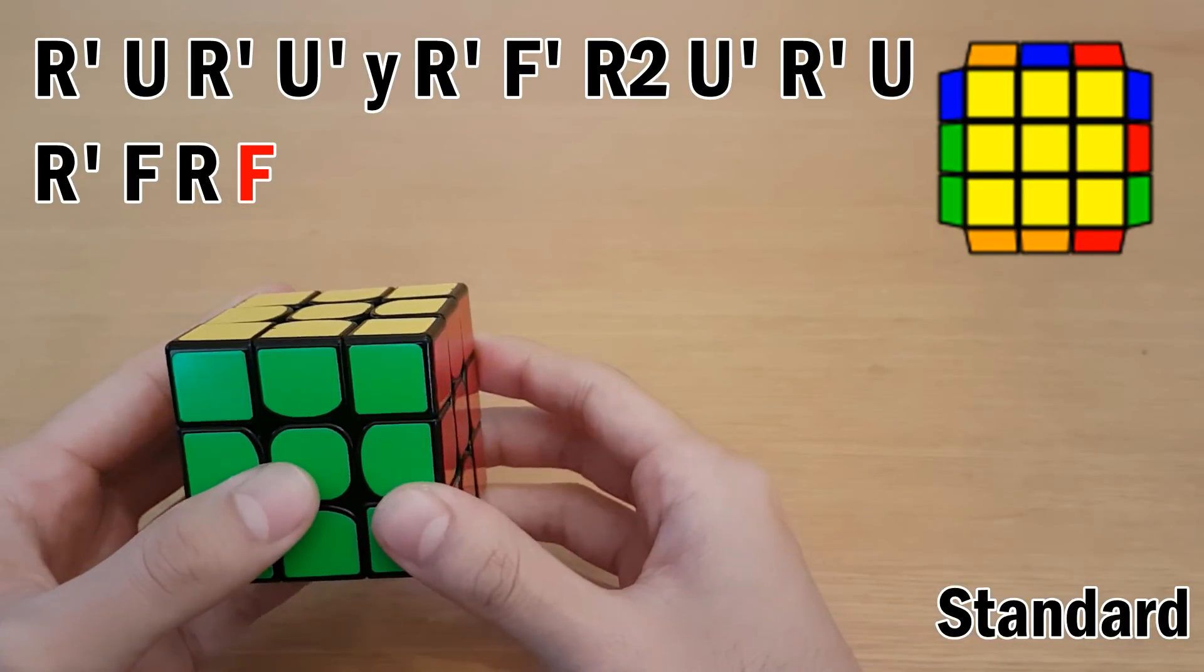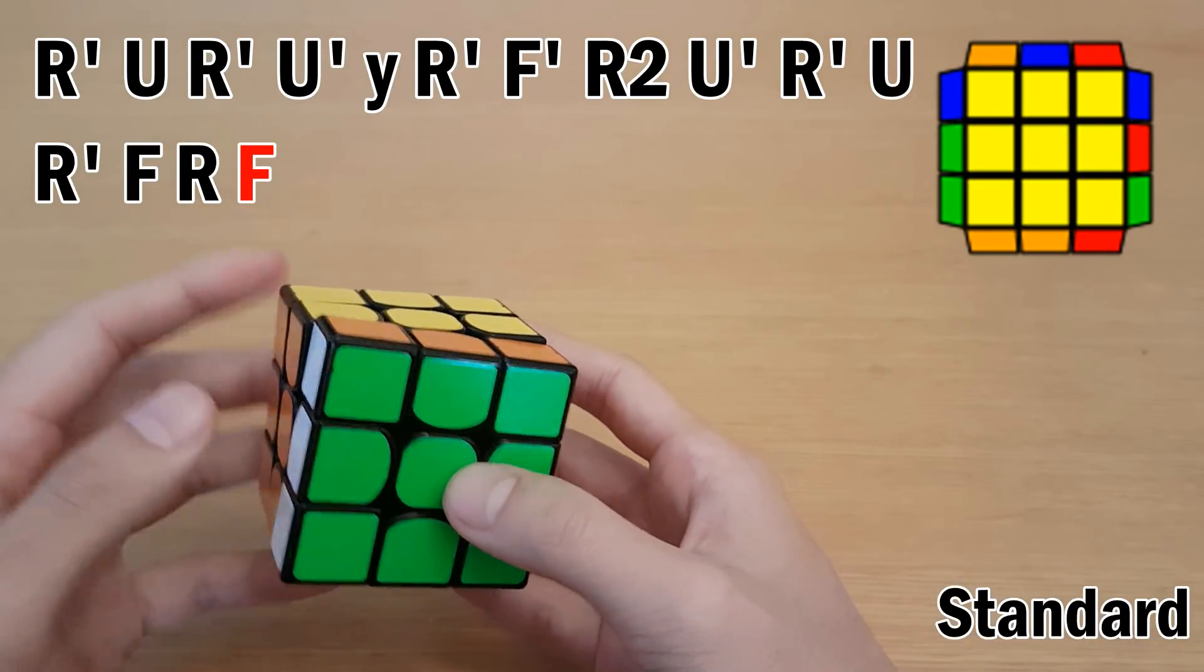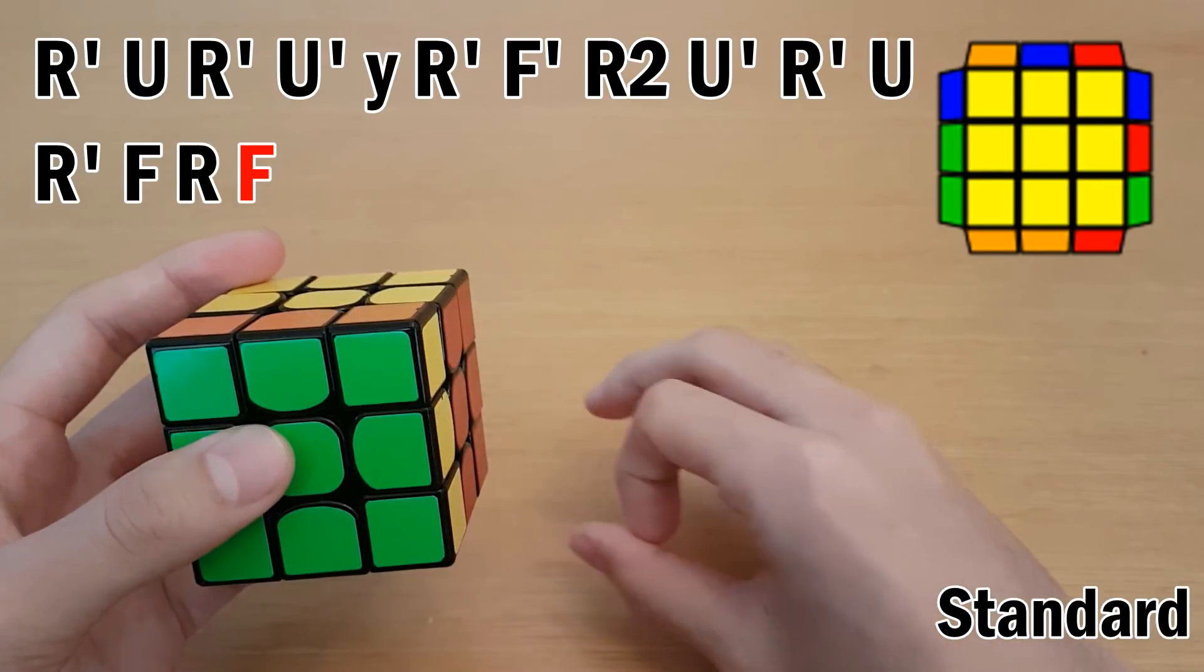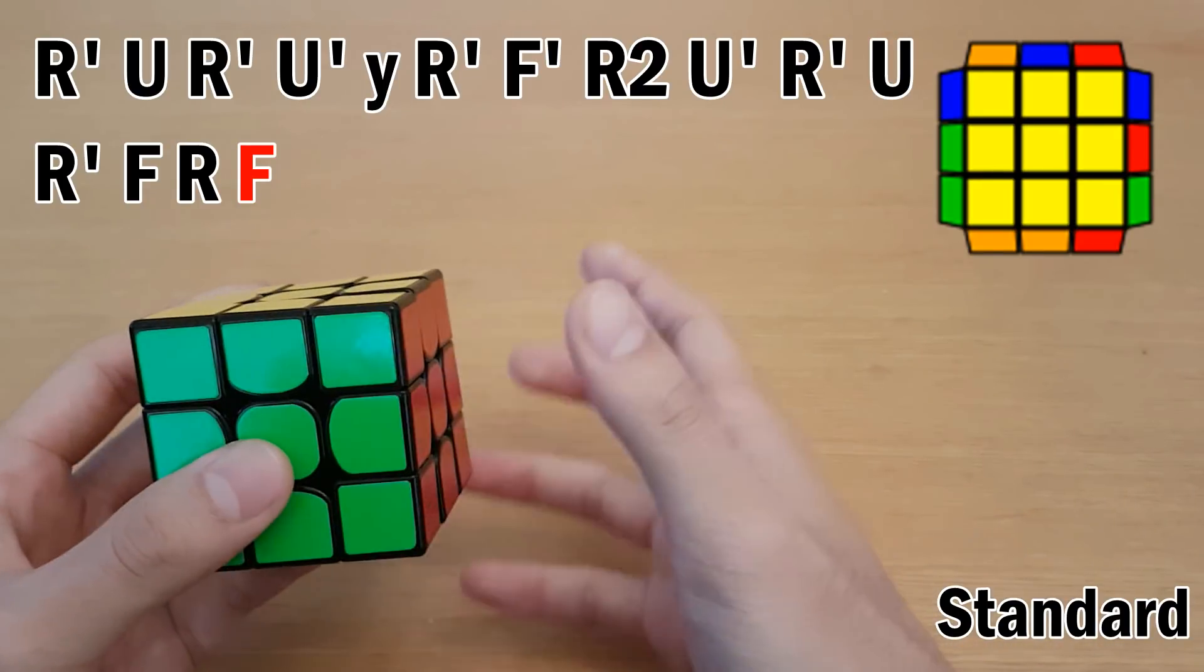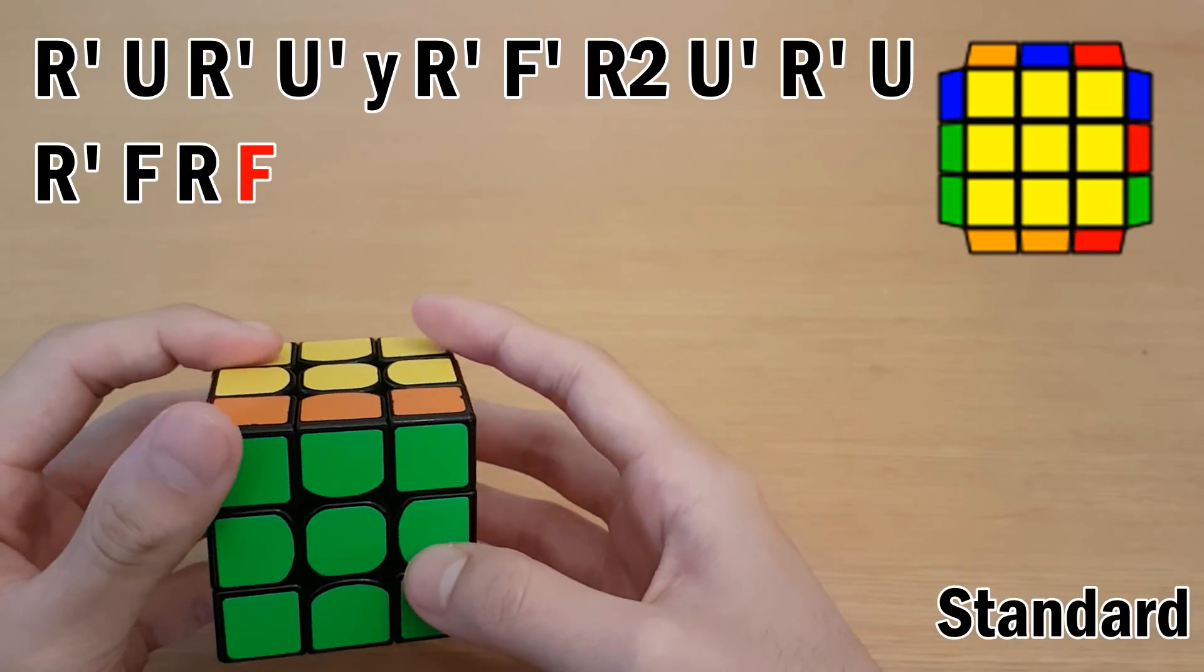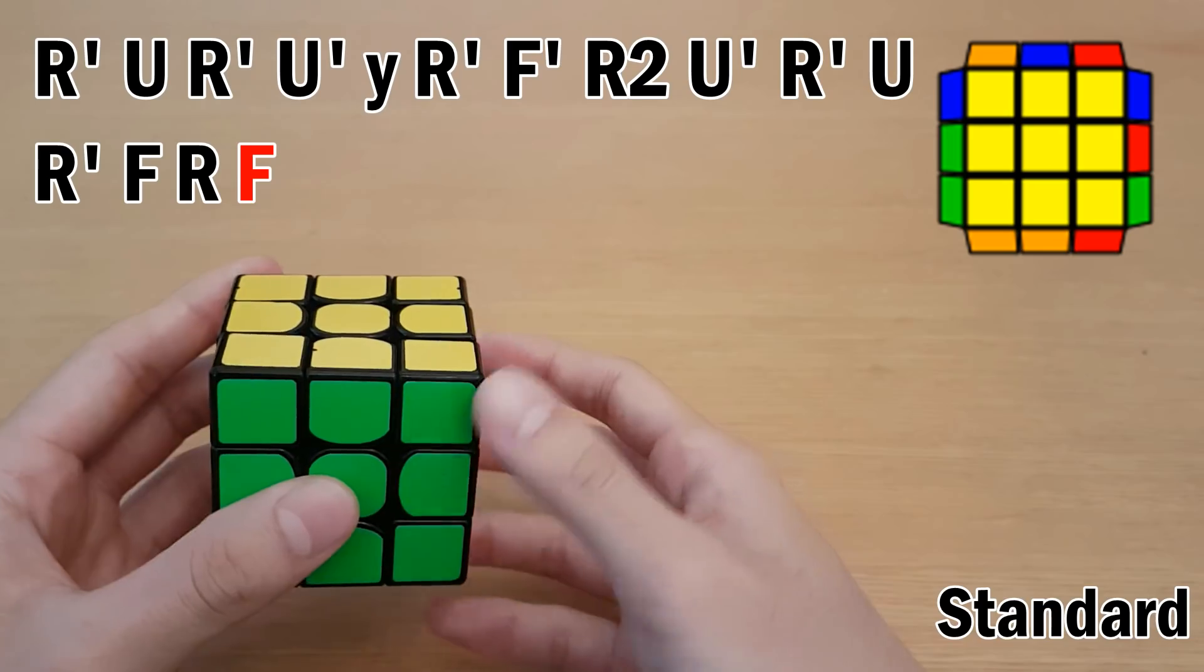Now another thing you can add to your V-perm is a thumb move like this at the end, so that you don't have to reset your hand from this position into this to do the F at the end. So that would look something like this. Now I'm not very good at this fast because I'm not good at thumb moves like this, but it's just something you can try out. It can make it really smooth.